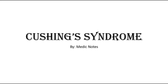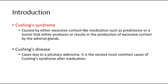This video is on Cushing's syndrome. For introduction, we are sometimes confused with two terms: Cushing's syndrome and Cushing's disease. Cushing's syndrome can be due to a few causes which result in the production of excessive cortisol by the adrenal glands. Whereas Cushing's disease means the case is specifically due to a pituitary adenoma, and it is one cause of Cushing's syndrome.